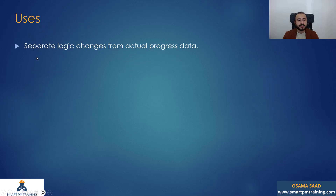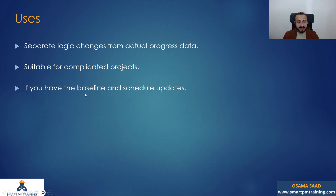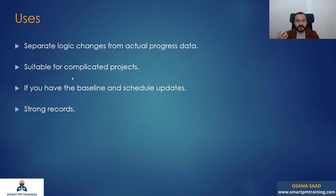Uses: it will split the logic changes from actual progress data. It's acceptable for complicated projects. If you have the baseline and schedule updates, one of the uses is when you have strong records, because — as with 3.3 — we are performing the analysis manually, comparing the planned against the as-built. So you must have strong records to justify your claim and analyze the delay effectively. If you want to perform window analysis, then it is a good method.